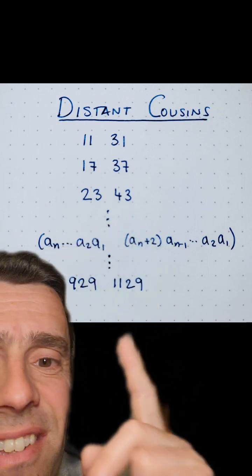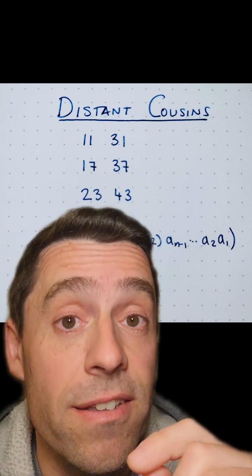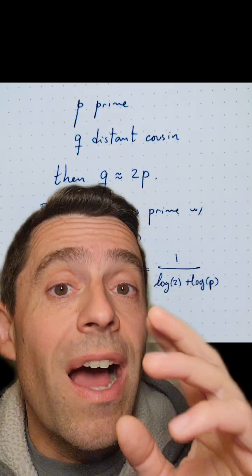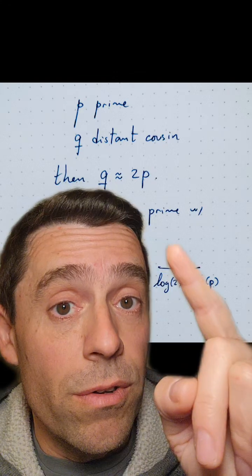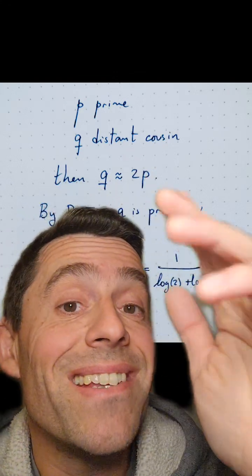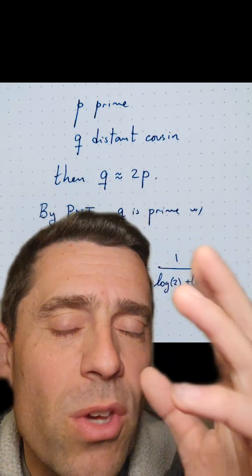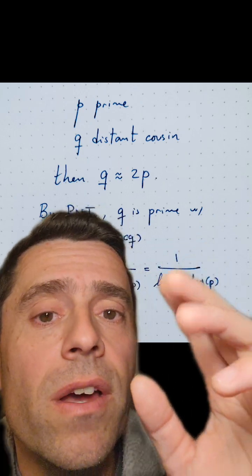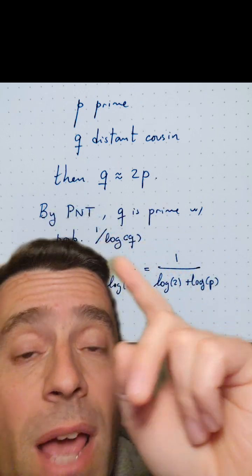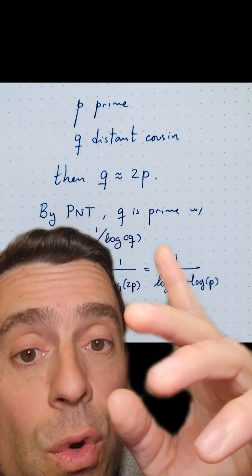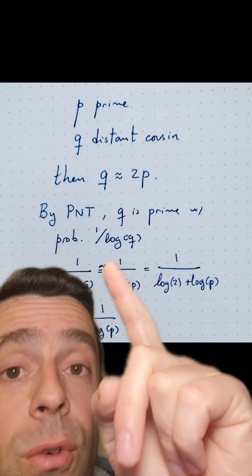However, it seems pretty difficult to prove that there are infinitely many distant cousins. But heuristically, I think I can conjecture that there must be infinitely many distant cousins as follows. Let P be a prime that does have a distant cousin; call the distant cousin Q. Then Q, because of the way distant cousins are defined, is about twice P. Now, by the prime number theorem, Q is prime with probability approximately 1 over log of Q.